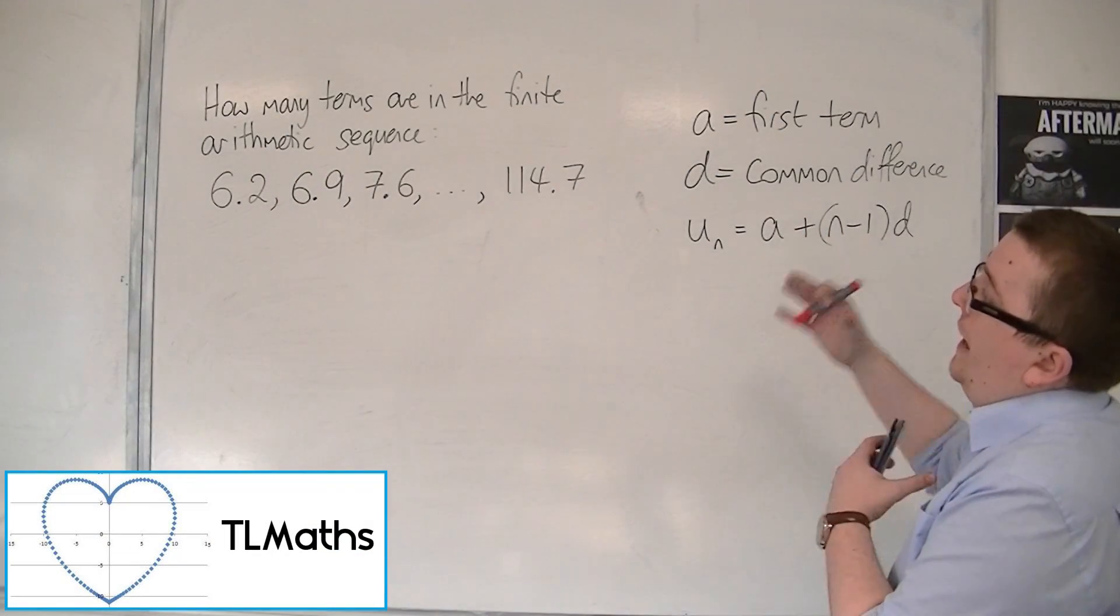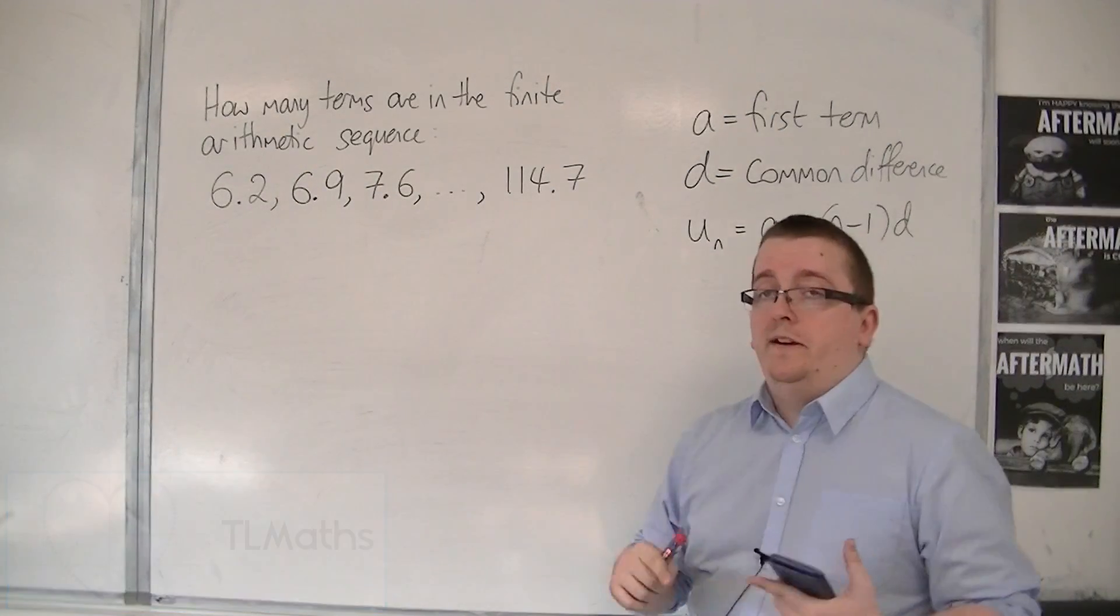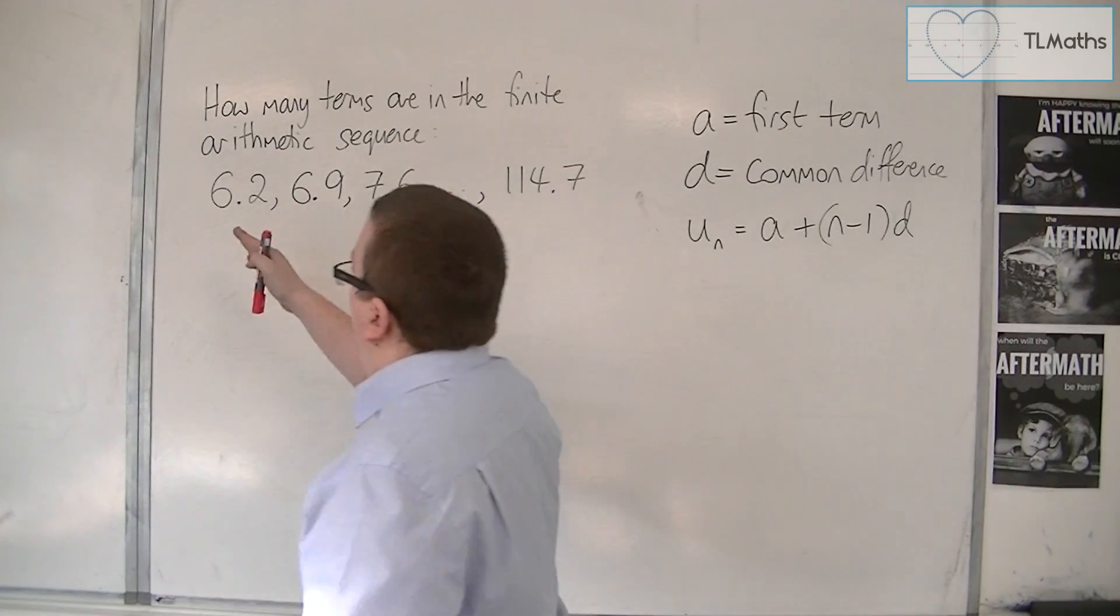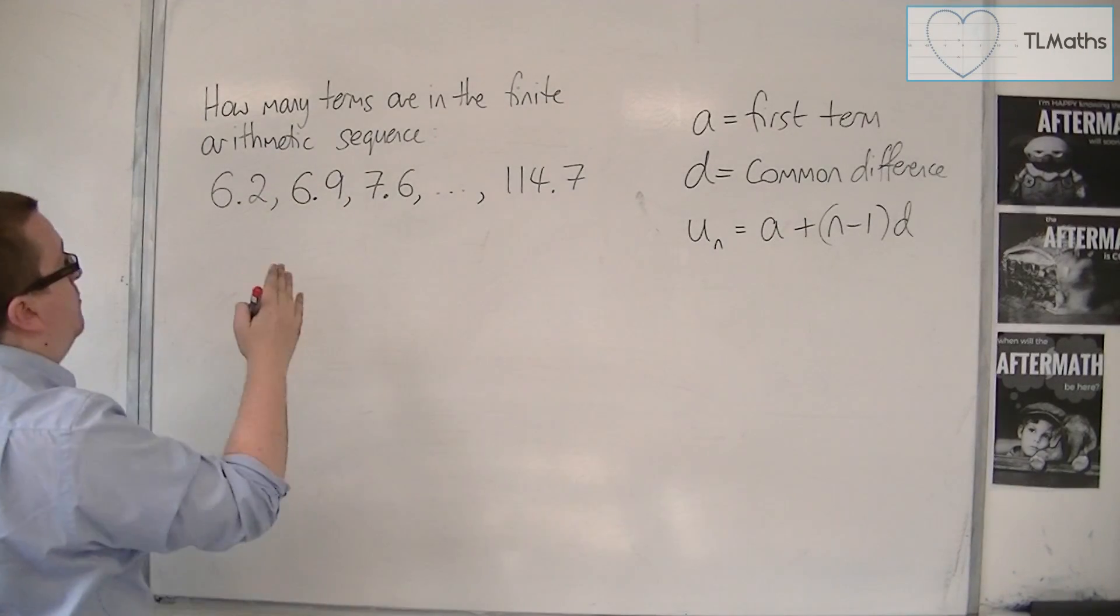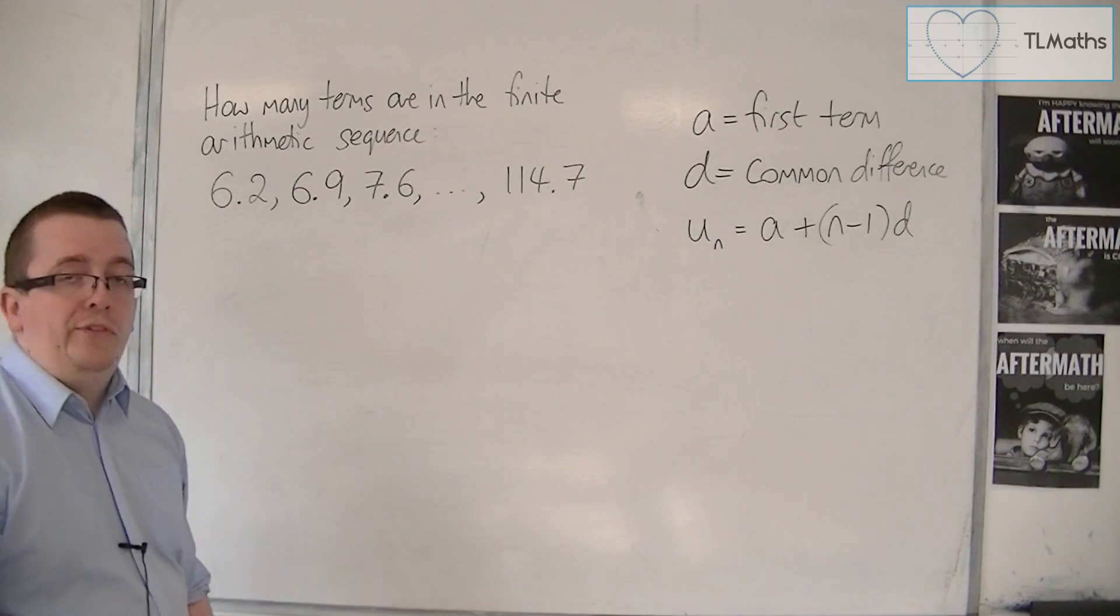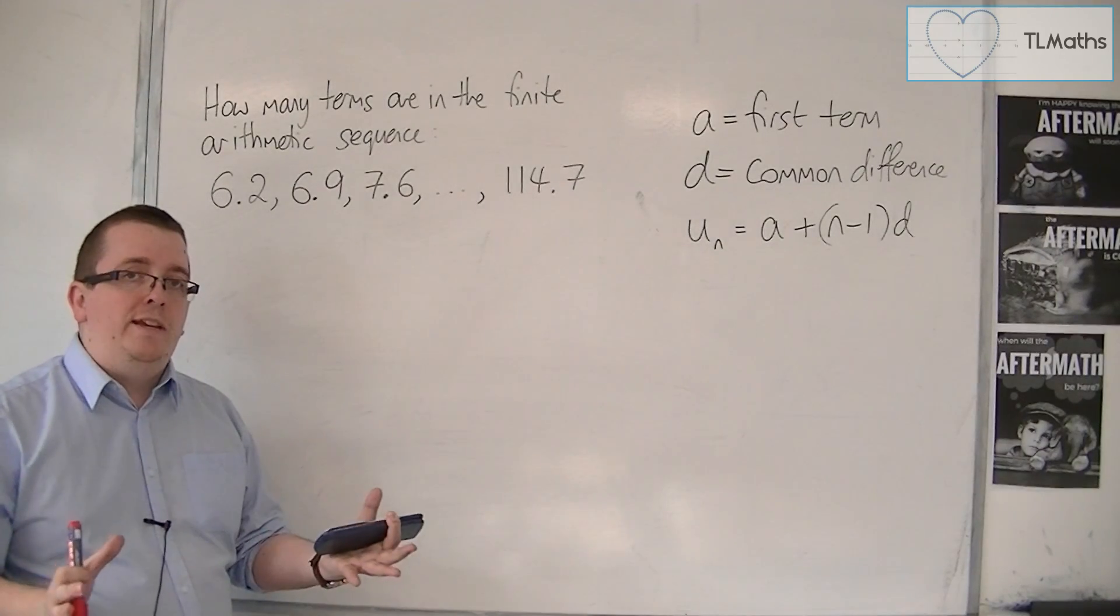Let's say I was asked how many terms are in the finite arithmetic sequence: 6.2, 6.9, 7.6, and all the way up to 114.7. How many terms are actually in this sequence?